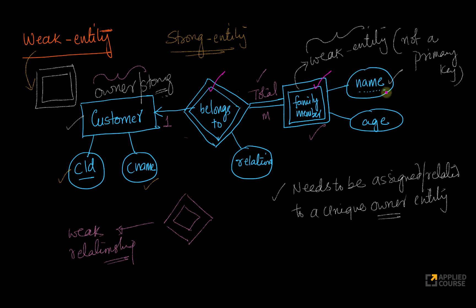There is a key associated with a weak entity, but it cannot uniquely determine the weak entity by itself. You need this key along with the key of the owner entity to uniquely determine the weak entity. It's actually a very simple concept.